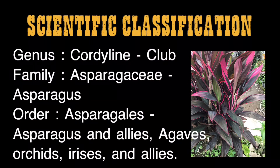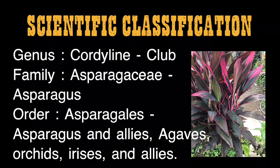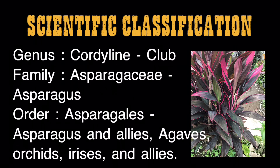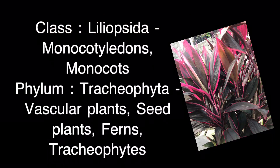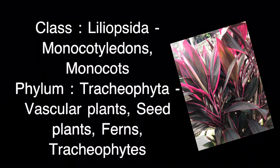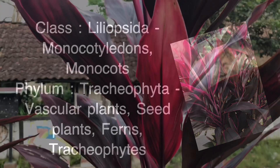Scientific classification: Genus — Cordyline. Family — Asparagaceae. Order — Asparagales, which includes agaves, orchids, irises, and allies. Class — Liliopsida, monocotyledons. Phylum — Tracheophyta, which includes vascular plants, seed plants, ferns, and tracheophytes.